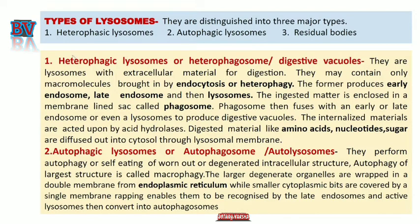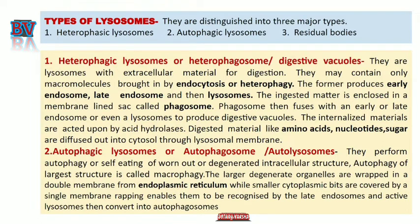Secondary lysosomes are of two types: heterophagic and autophagic. Tertiary lysosomes are residual bodies. Heterophagic lysosomes, also called heterophagosomes or digestive vacuoles, are lysosomes that contain extracellular material for digestion. They may contain macromolecules brought in by endocytosis or heterophagy. If the substance for digestion comes from outside the cell by endocytosis or heterophagy, it is called a heterolysosome, and the digestive products diffuse out into the cytosol through the lysosomal membrane.